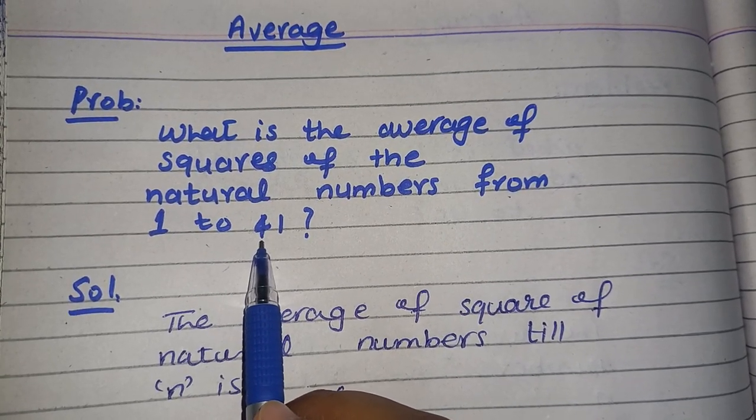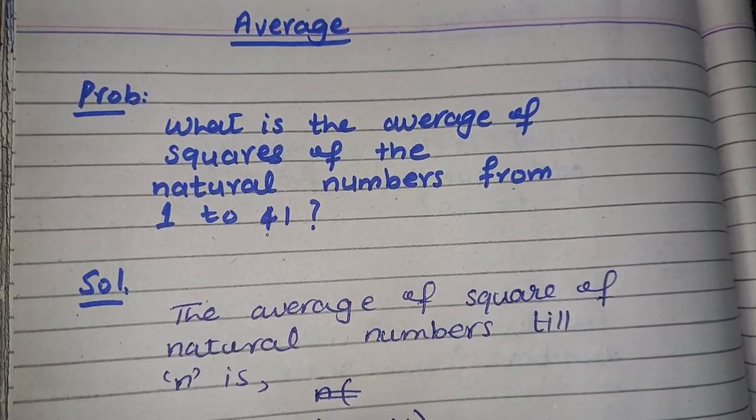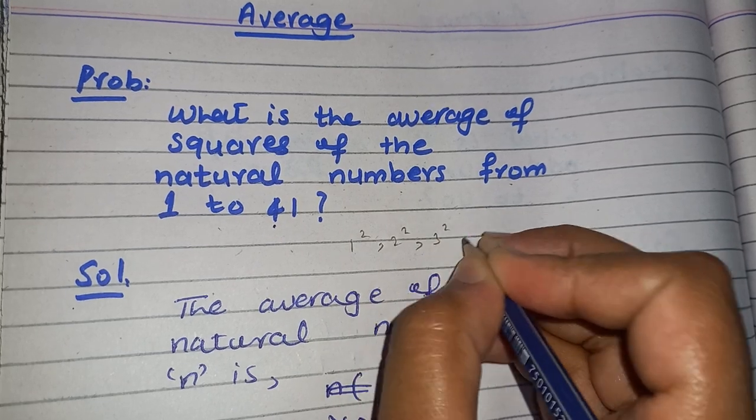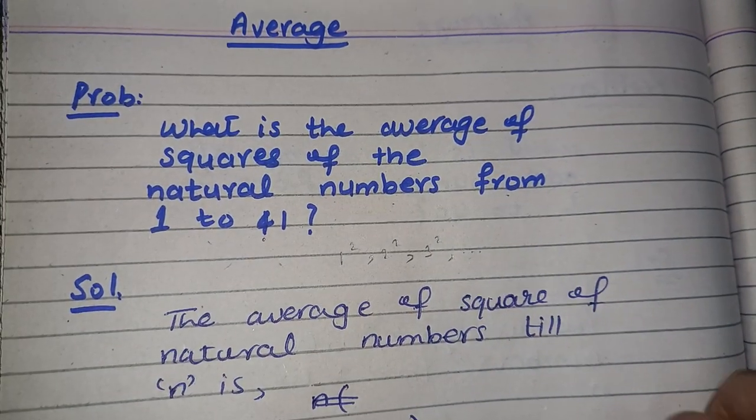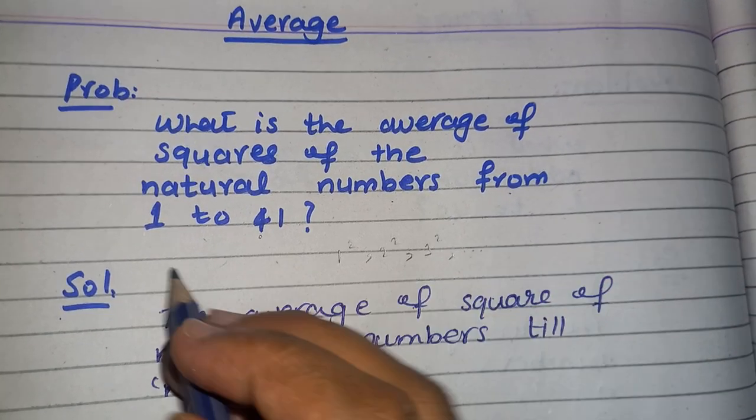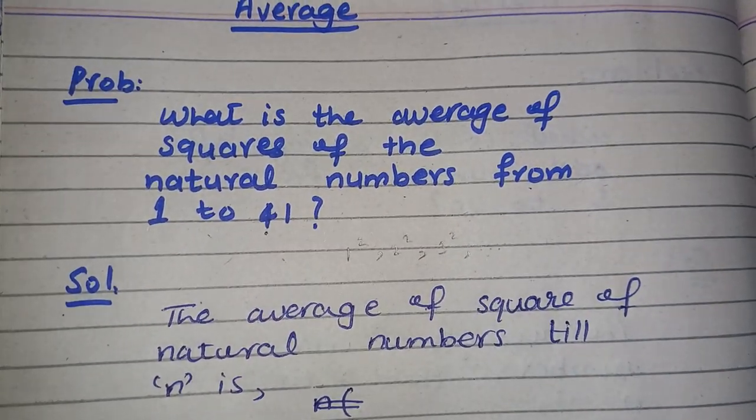Students, if you are asked to find the average of squares of the natural numbers, for example, 1 square, 2 square, 3 square and so on, you are given the squares of the natural numbers and you are asked to find the average of them till 41.